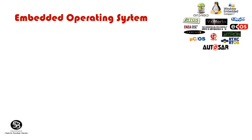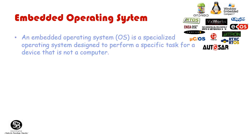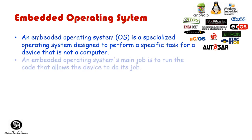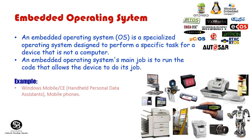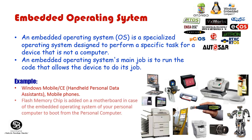Embedded Operating System: An embedded OS is a specialized operating system designed to perform a specific task for a device that is not a computer. Its main job is to run the code that allows the device to do its job. Examples include Windows Mobile, handheld personal data assistants, Symbian (a cell phone OS used in older Nokia phones), and flash memory chips added to motherboards for embedded OS booting.